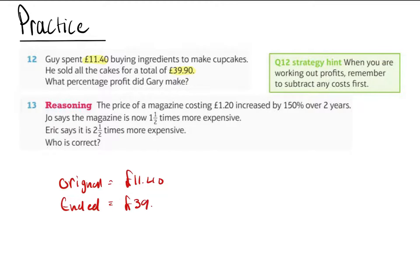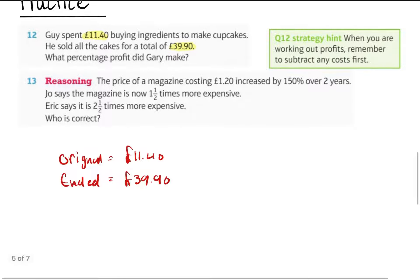Okay, I'm not gonna help you anymore. Find the change, find the original, go from there. The price of a magazine costing £1.20 increased by 150% over two years. So £1.20 equals 100%, what's 150% going to be? It increases by that, so £1.80 equals 150%...